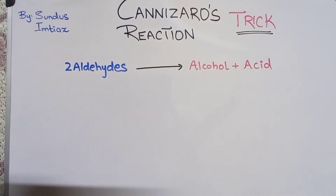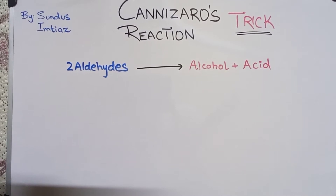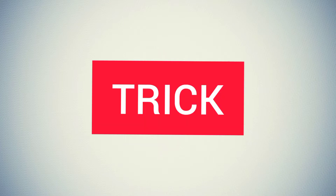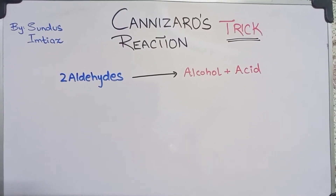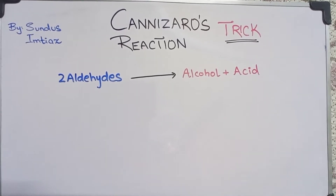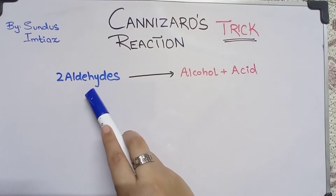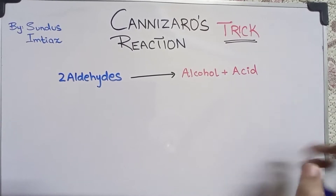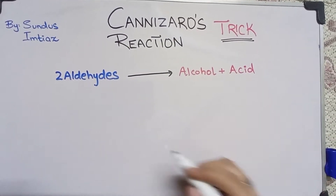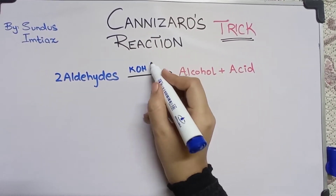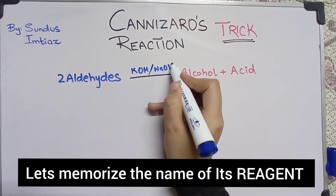Hello students, today I am going to tell you one short trick about Cannizzaro's reaction that will help you to complete the products. First of all, before going towards the trick, I will tell you the basic reaction of Cannizzaro's, where two aldehydes react together to form alcohol and acid. The reagents used here can be KOH or NaOH.